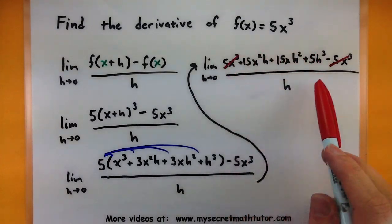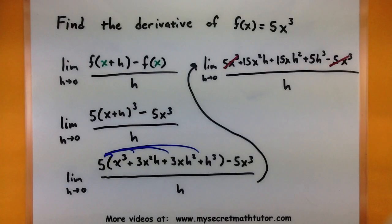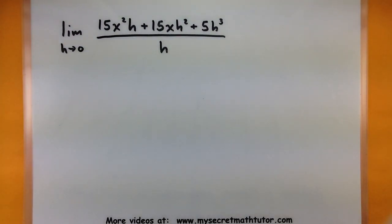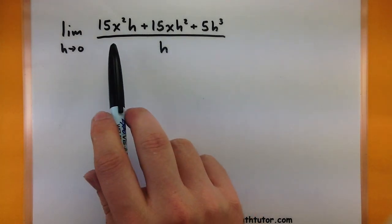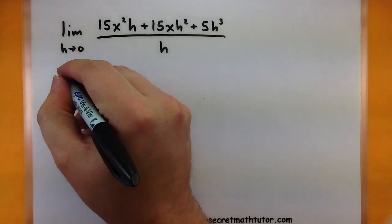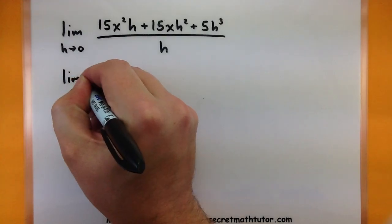So now I just need to continue simplifying the rest of this. Well, I've already written that down, so let's continue on with it. One thing you want to notice is everything in the top has an h and there's a single h in the bottom. So we can factor out an h in the top and eventually cancel it out.